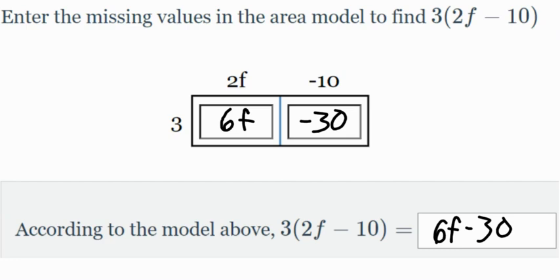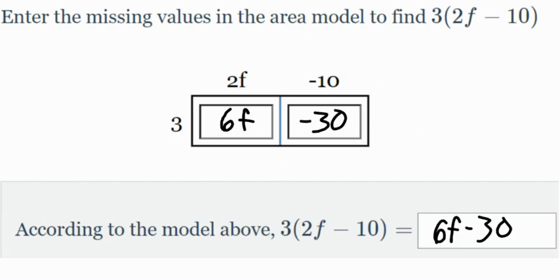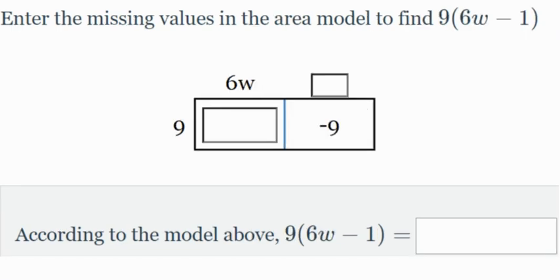So just think right here. We have 3 times 2f. That gives us 6f right here. 3 times negative 10 gives us negative 30. So again, I hope that this square model up top right here is helping you out. I'll do one more example with this square model or a rectangle model.